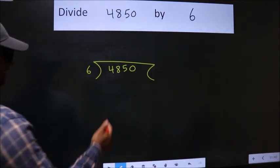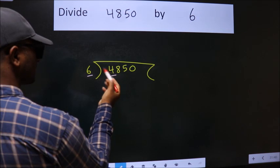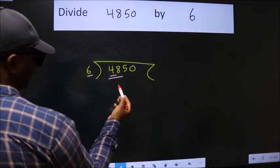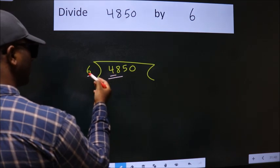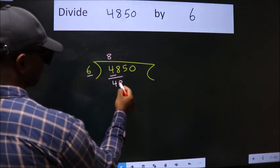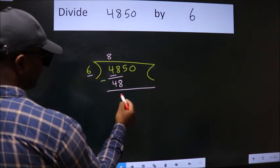Next. Here we have 4, here 6. 4 is smaller than 6, so we should take two numbers: 48. When do we get 48 in the 6 table? 6 times 8 is 48. Now we should subtract. We get 0.